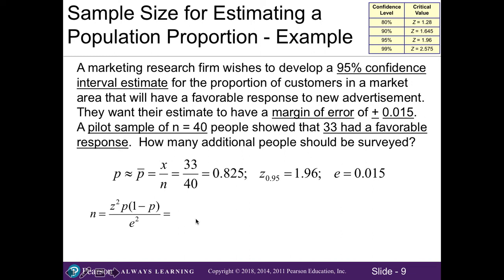So plugging in all of our numbers into the formula, I'm going to take 1.96 squared times our p of 0.825 times its complement or 1 minus p. In this case, it's 0.175. Then I'm going to divide that by 0.015 squared and that gives me 2465.03.